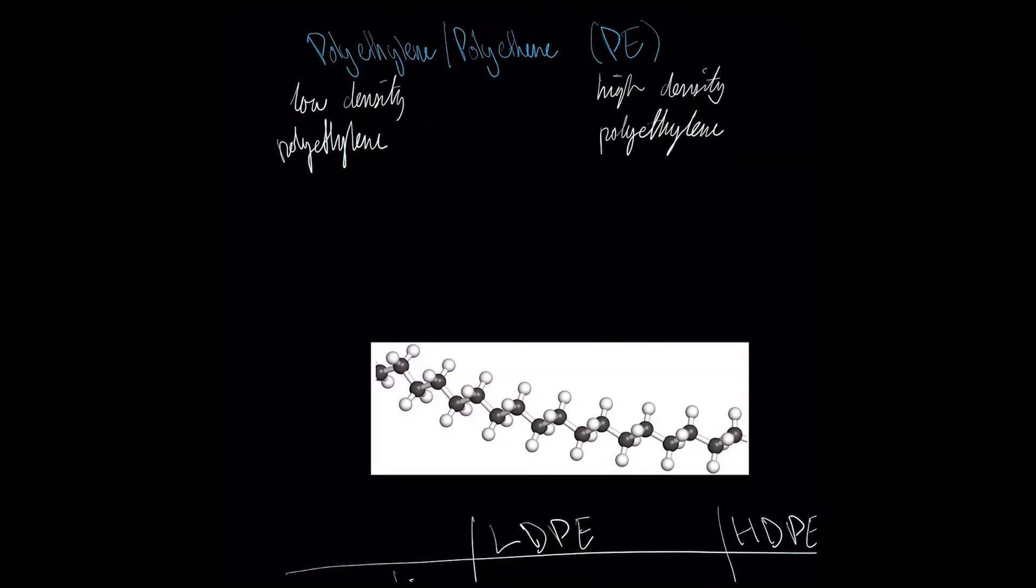When we name an addition polymer, we simply place poly in front of the name of the monomer. Notice that when we polymerize ethene, also called ethylene, we create polyethene, which we sometimes call polyethylene. Even though this name has the -ene suffix, polyethylene or polyethene is a saturated molecule. Effectively, it's a very long alkane.